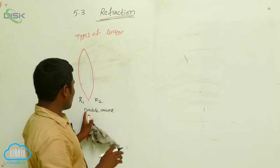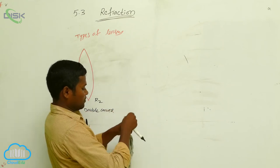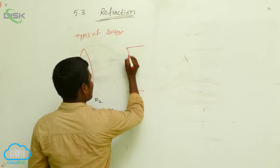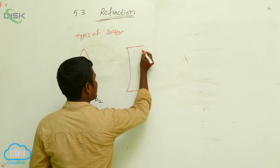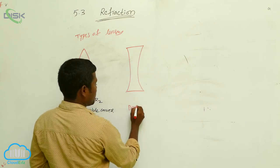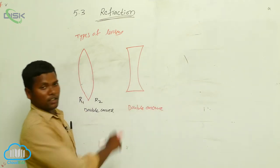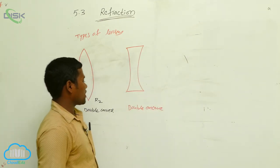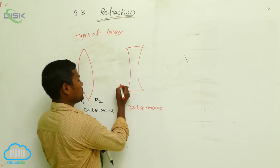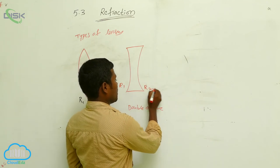Similarly, we can draw opposite to this one — double concave. This is double convex, this is double concave — same thing here. This is also R1, this is also R2.